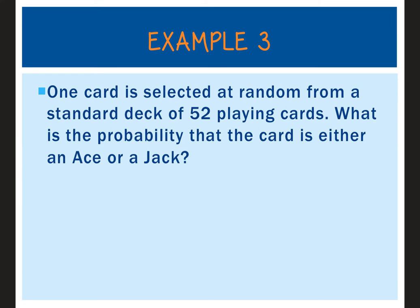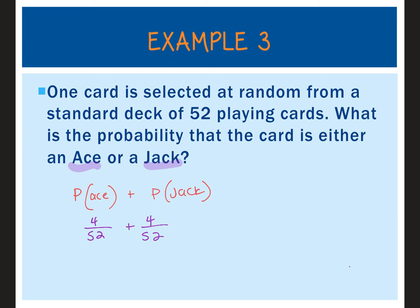Example 3: one card is selected at random from a standard deck of 52 playing cards. What's the probability the card is either an ace or a jack? First, are they mutually exclusive? Can a card be both an ace and a jack? No — so these are mutually exclusive. P(ace) = 4/52, P(jack) = 4/52. Both reduce to 1/13, so P(ace or jack) = 1/13 + 1/13 = 2/13.